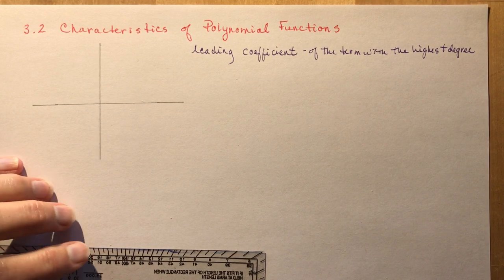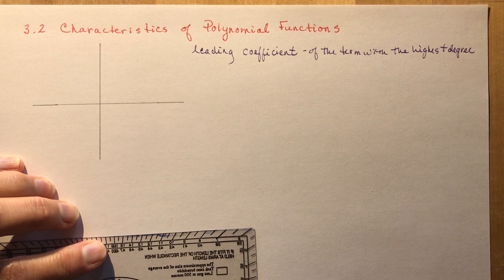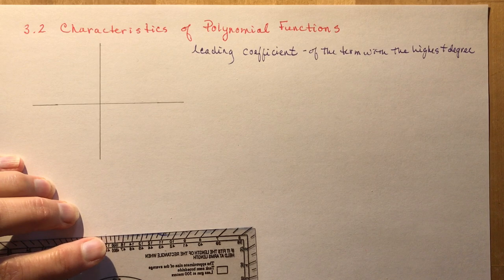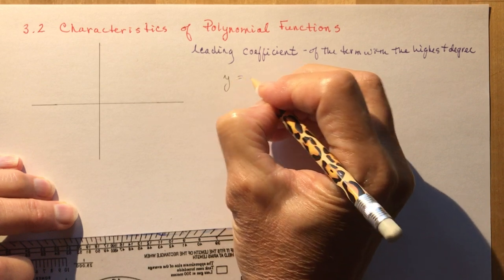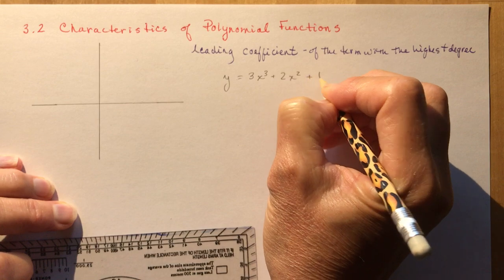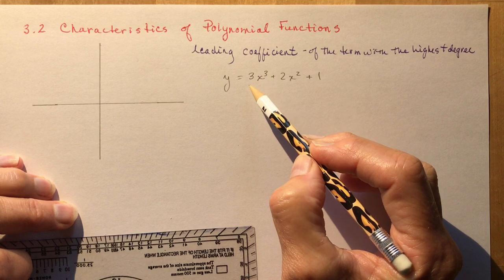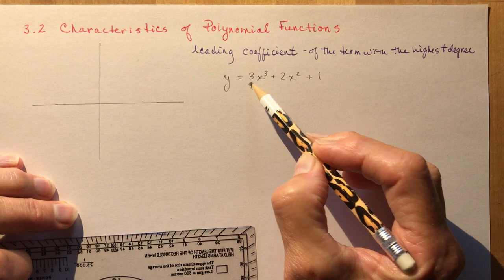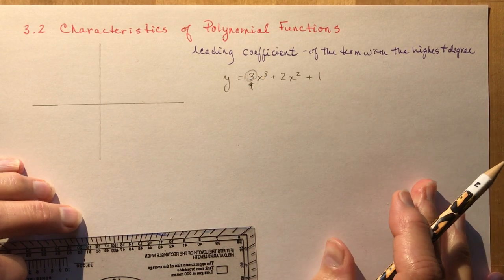The first thing we want to talk about is what is a leading coefficient. The leading coefficient is the number that's in front of the term with the highest degree. So if you had something like y equals 3x³ + 2x² + 1, then the degree of the polynomial would be 3 and the leading coefficient would also be 3. We want to know whether this number is positive or negative, because that's going to help us graph the function.